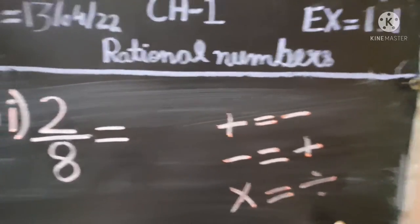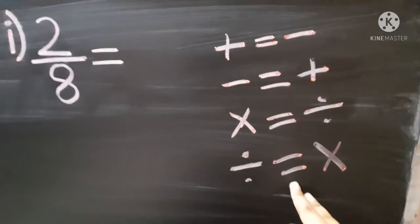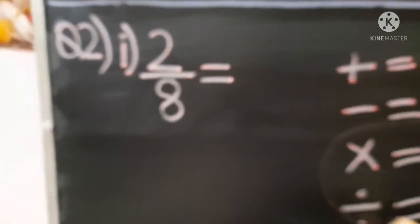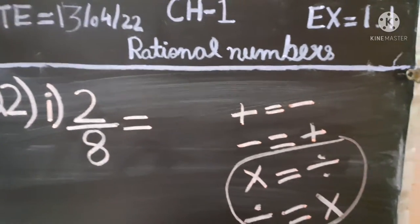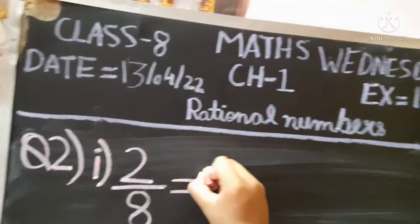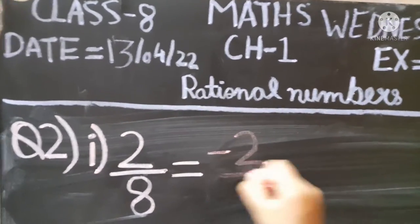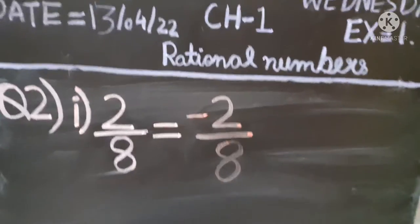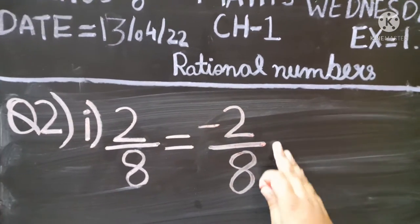Those multiply and divide formulas have not come in our book — only the minus-plus one is there, and it is from sixth class. So the additive inverse of 2 upon 8 will be minus 2 upon 8. It was in positive, and in the additive inverse form it will be minus 2 upon 8.